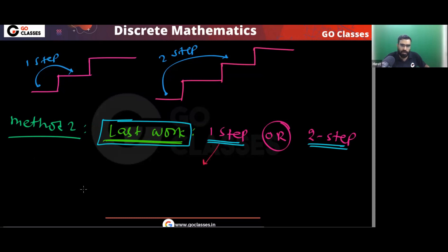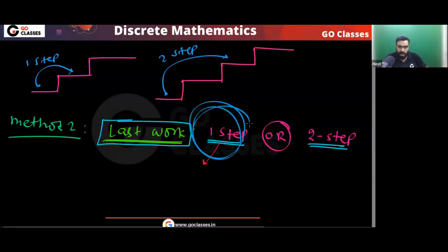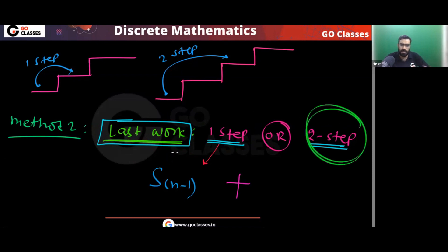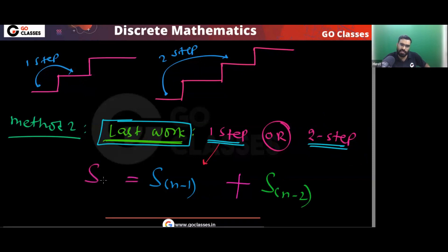If your last work is one step, it means you have already climbed N-1 stairs. You just need to take one final step. Or if your last work is two steps, then you have already climbed N-2 stairs. So the recurrence relation will be the same.